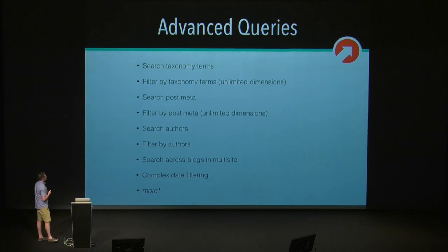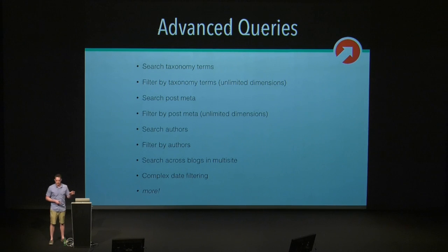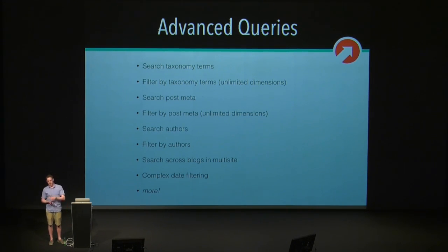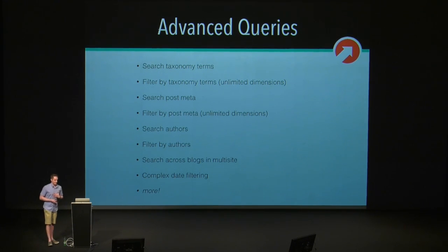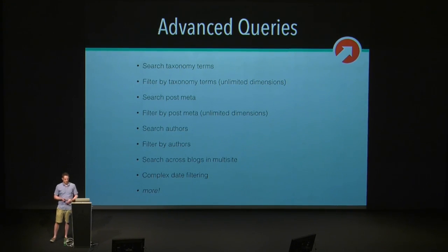With ElasticPress, we can do a lot of really powerful advanced queries. We can search taxonomy terms — how many times have you had a client who wanted to search their categories and tags when they go to search their website? I've experienced that many times, and it's not very easy to accomplish. We can also search post meta and filter by those things. We can actually search authors and filter by authors. And again, we can search across blogs in a multi-site — a lot of really powerful functionality.